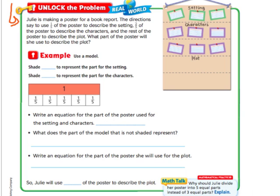It says Julie is making a poster for a book report. The directions say to use one-fifth of the poster to describe the setting. See how they've broken it up into fifths? Here's one-fifth, two-fifths, three-fifths, four-fifths, five-fifths. And she's to use two-fifths of the poster to describe the characters. So she's got one row there and one row there for the characters. And the rest of the poster will be to describe the plot.